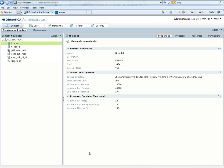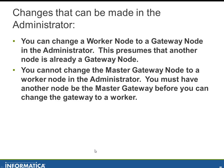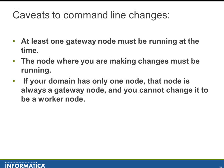That's an example of changes you can make in the administrator console. Now let's talk about changes you can make at the command line. We can switch to gateway node or switch to worker node at the command line. Some important caveats: at least one gateway node must be running at the time; if there's only one gateway running, that's the master. The node where you are making the changes must be running, and if your domain has only one node, that node is always the gateway node and cannot be changed to a worker node.